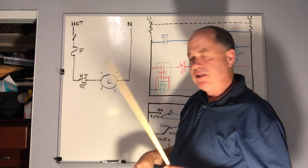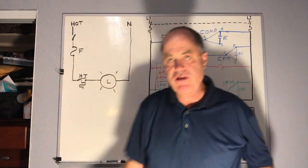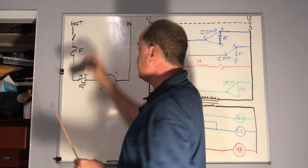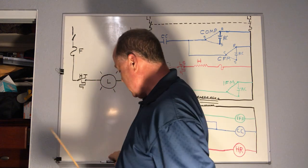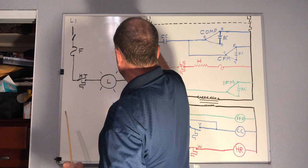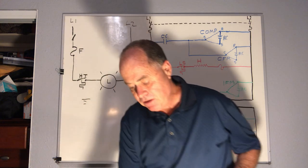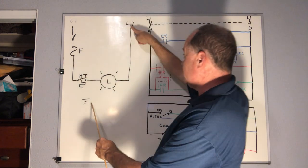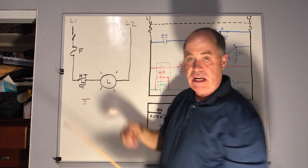Let's try something a little bit different so we can understand the difference between 115 volts and 230 volts. Let's say this is L1 and L2, and then you have a ground. L1 to ground would be 115 volts, L2 to ground is 115 volts, and together it's 230 volts.